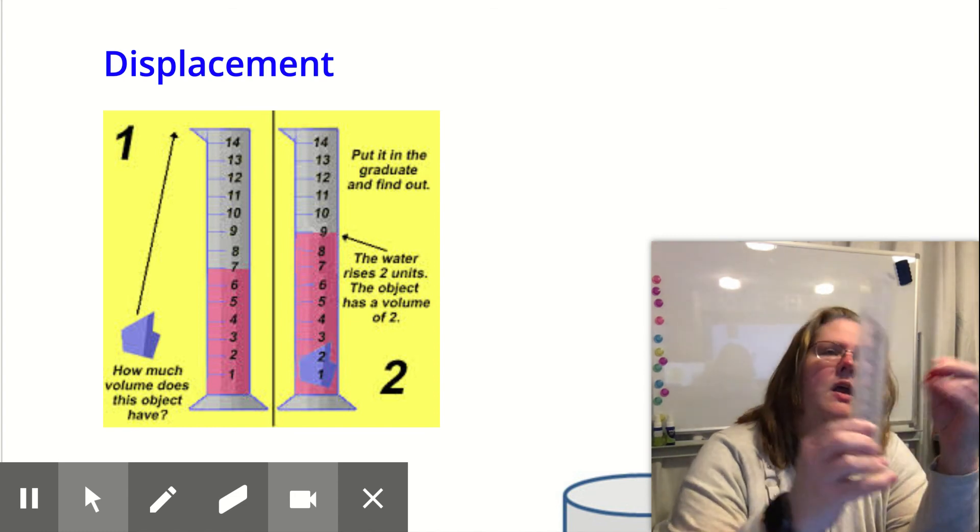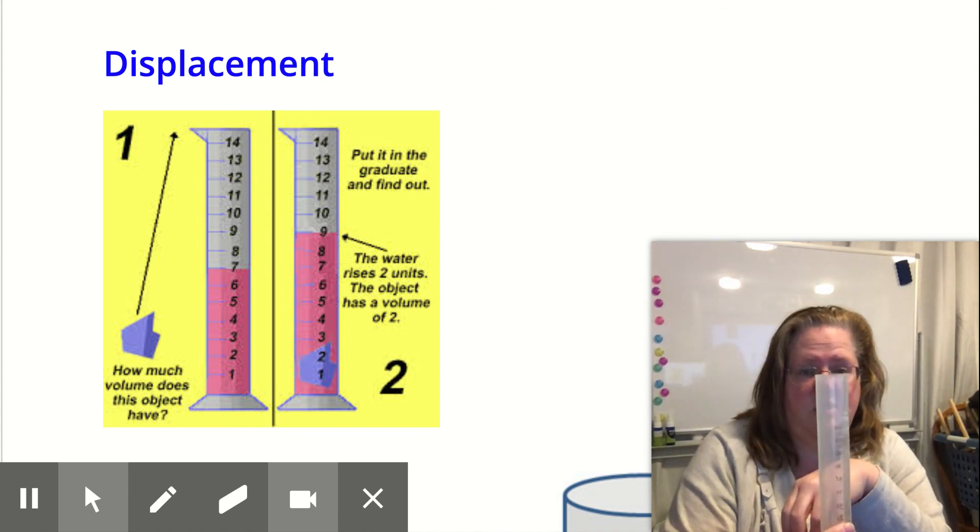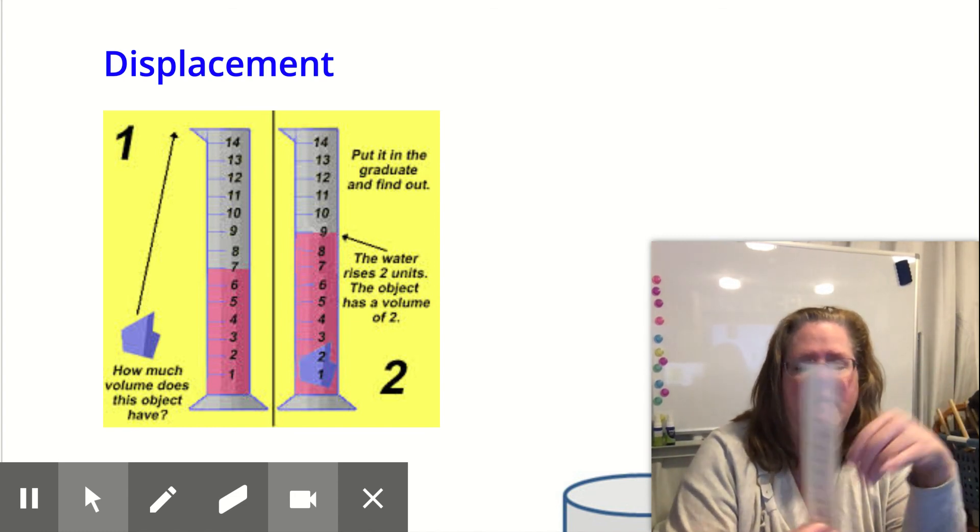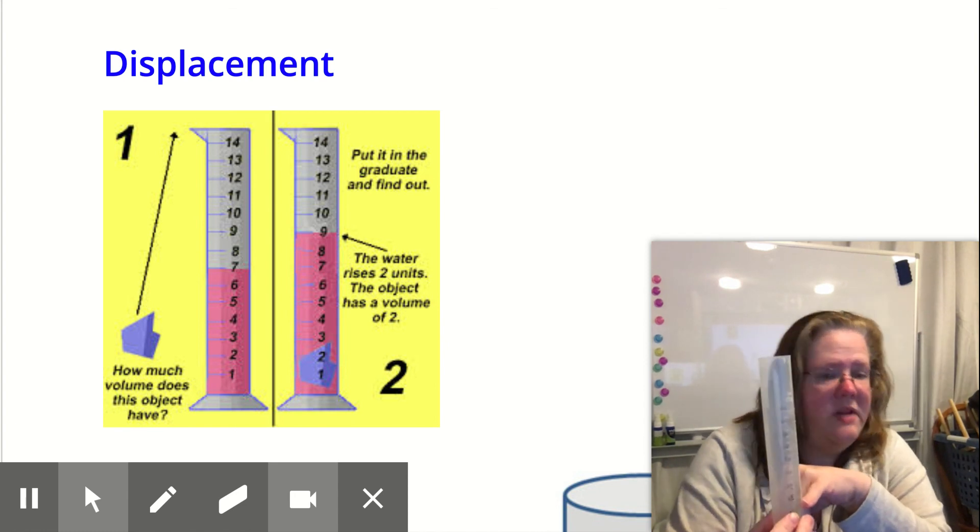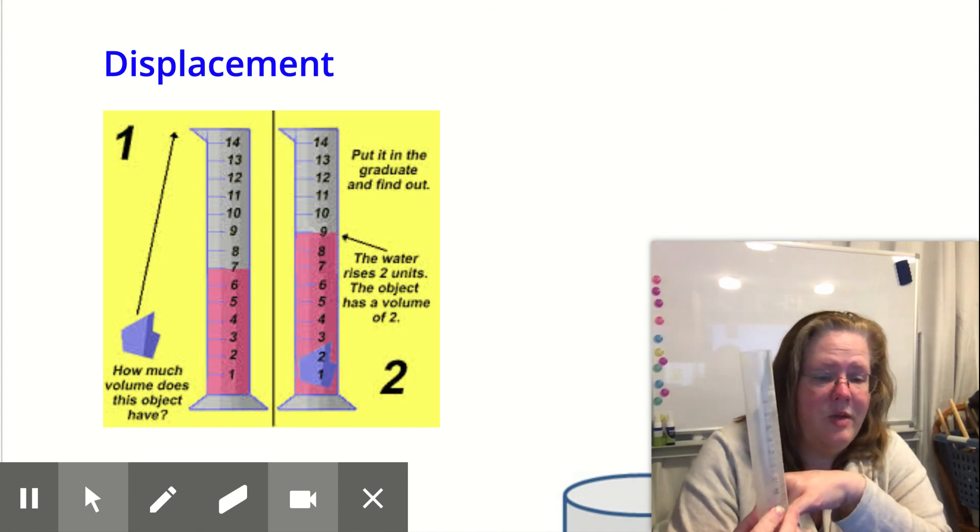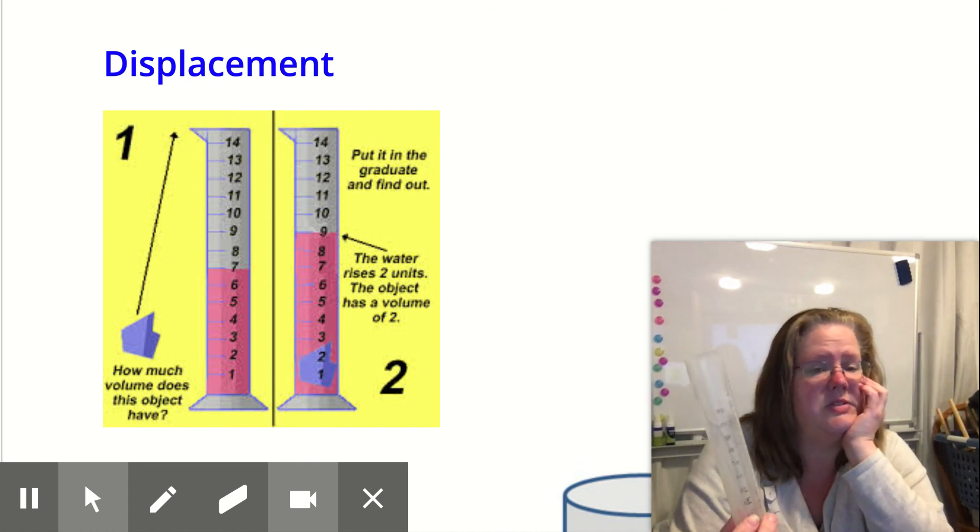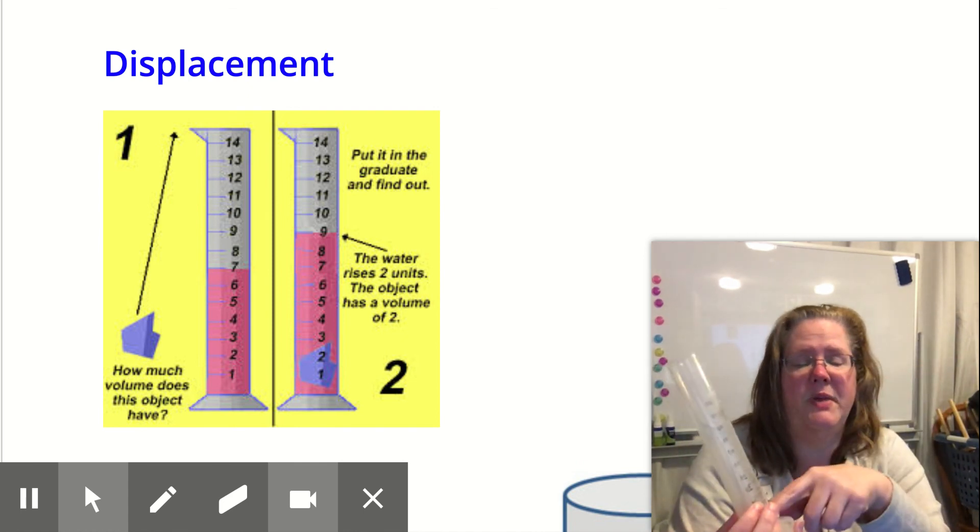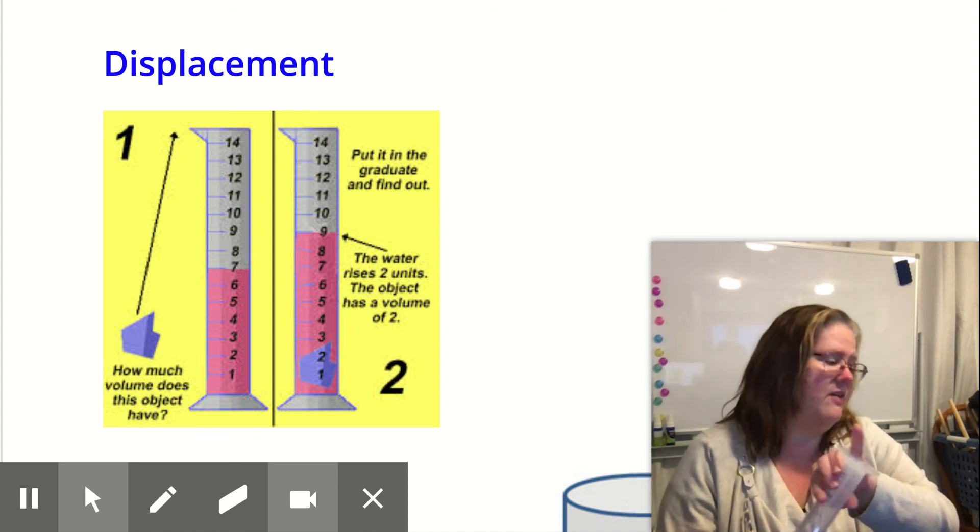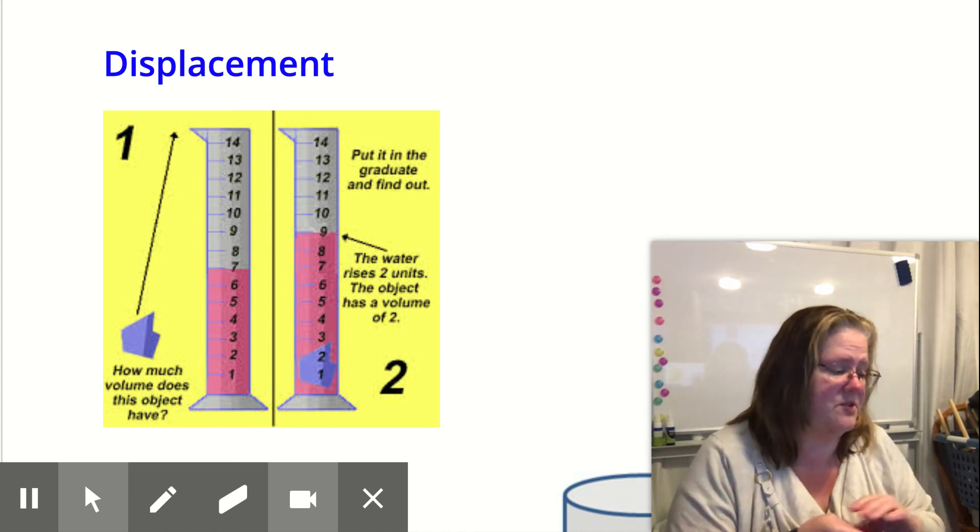But what I can do is I can put water in here and let's say I filled it up to the 20 milliliter mark and I note that. So I start at 20. Then I put the bear in and my water raises to the 25 milliliter mark. Well, the volume of that bear went from 20 to 25. It's just a simple matter of subtraction. 25 minus 20 means the bear's volume is 5 milliliters or 5 cubic centimeters because it's a solid.